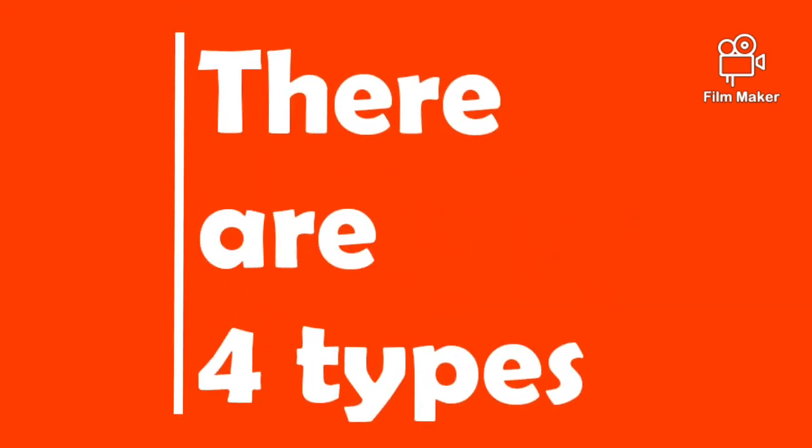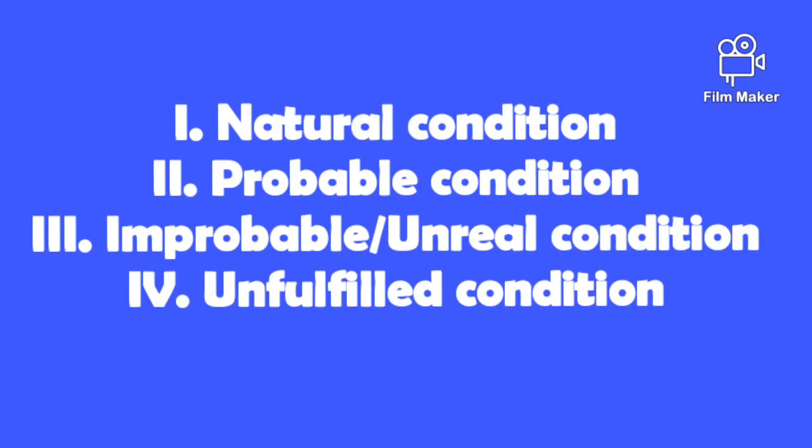There are four types. We will see one by one. First one is natural condition. Second one is probable condition. Third one is improbable or unreal condition. And the last one is unfulfilled condition.